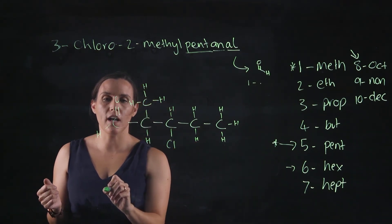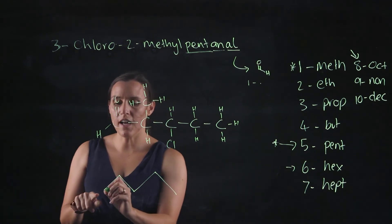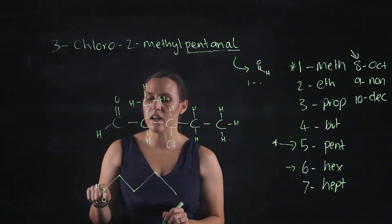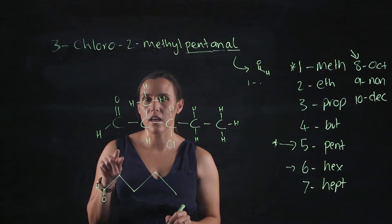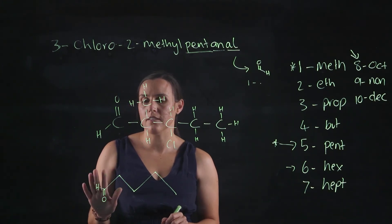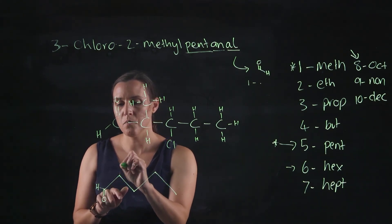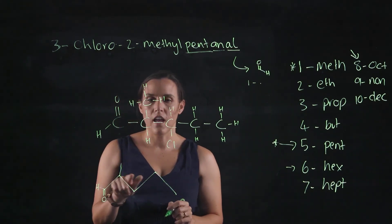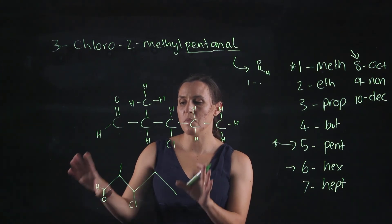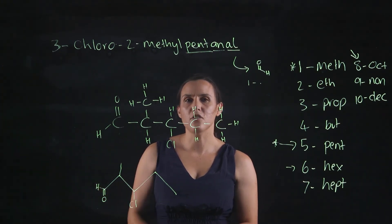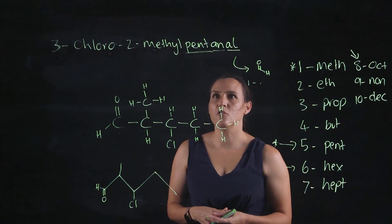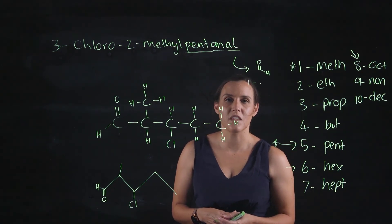Now drawing the line diagram for 3-chloro-2-methylpentanal: one, two, three, four, five, with the aldehyde on carbon one. Drawing in that hydrogen on the aldehyde is optional because it is implied — each carbon has four bonds so it doesn't need to be shown. On carbon two I have the methyl as a line, and on carbon three I have the chlorine; the rest follows from there. I tend to draw the hydrogen in just to clarify it for the reader. Thank you for watching this video — check out some of the other ones.